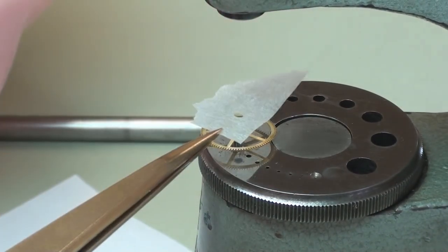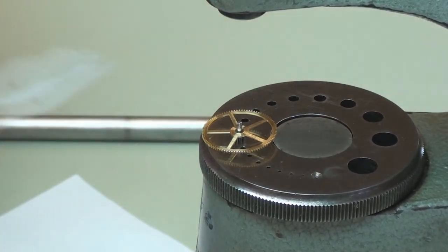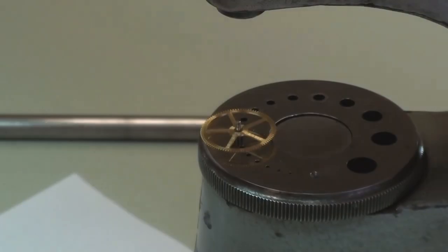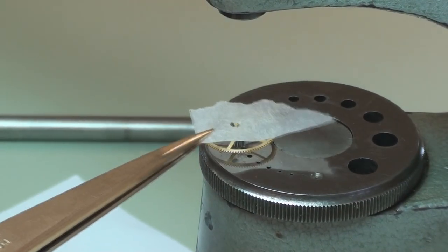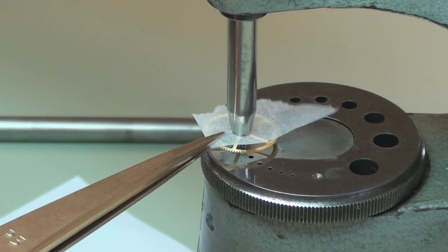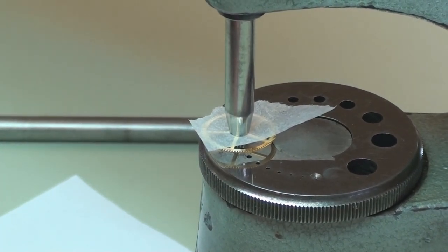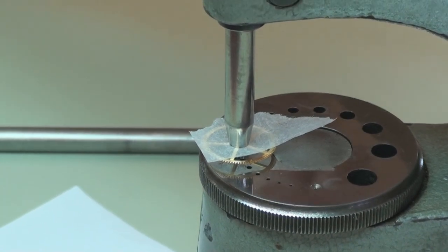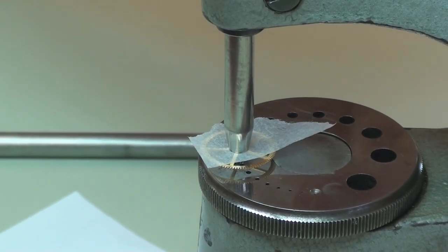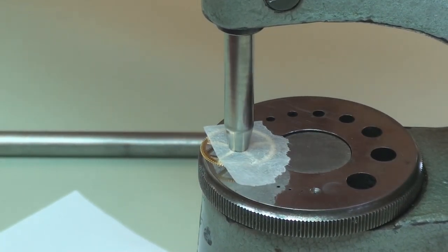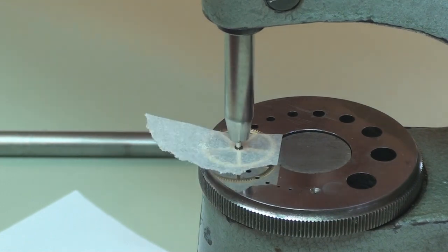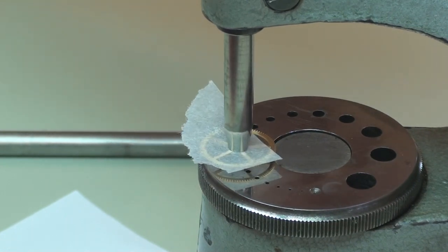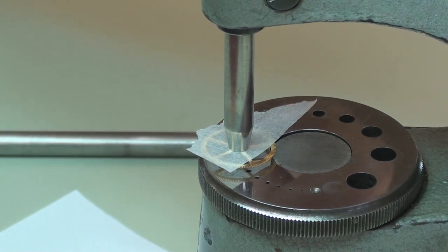So we just protect the grained surface finish with a piece of tissue, and then push it down on its seat and just give it a little tap, turning it while we do that just to make sure that it's properly seated.